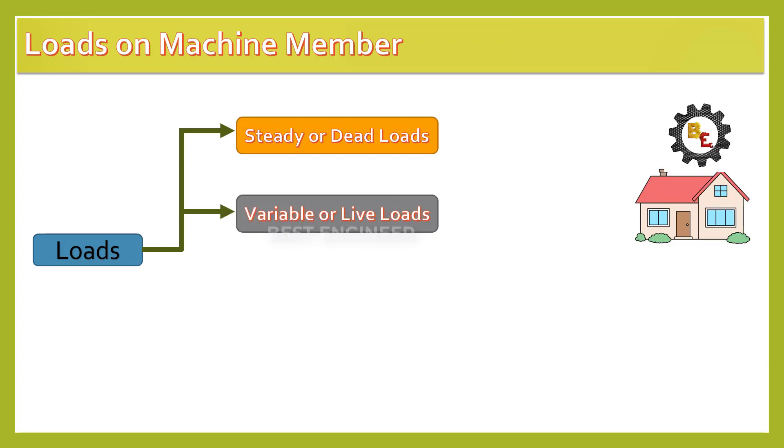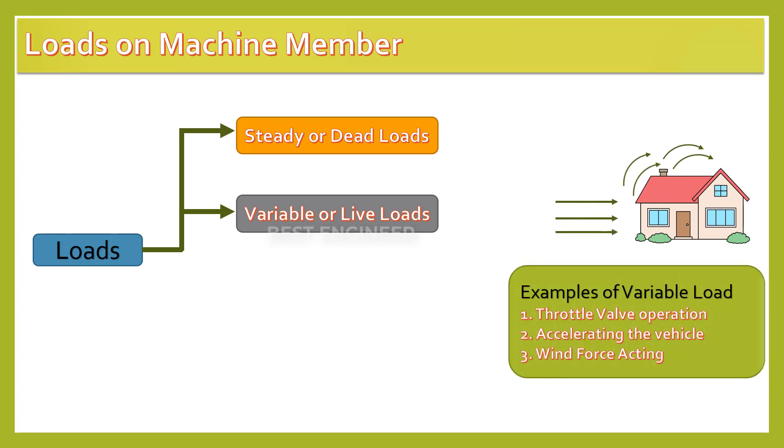Second type is variable load or live load. The load that changes its direction and magnitude is called variable load or live load.